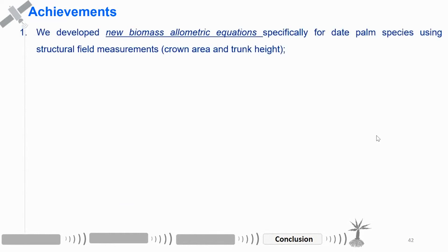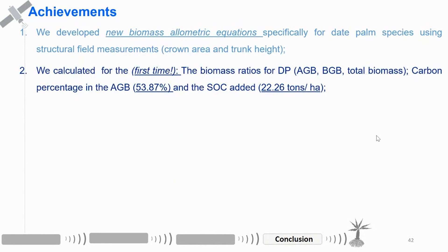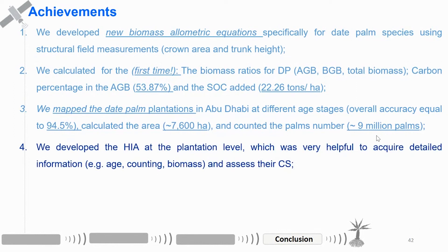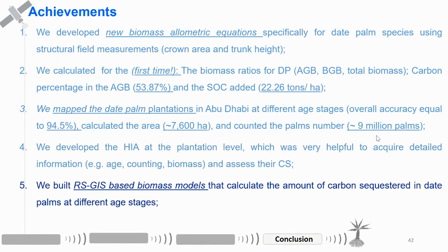In summary, what we achieved: first, we developed a new allometric equation for date palm. Second, we calculated the carbon percentage in the biomass of date palm and the soil organic carbon added to areas dominated by date palm. Third, we mapped the date palm plantation in Abu Dhabi at three different age stages with excellent accuracy and calculated the area and number of date palms. Fourth, we developed a hierarchical integrated approach using Landsat and WorldView together to extract information about age, count palms, and assess carbon stock.